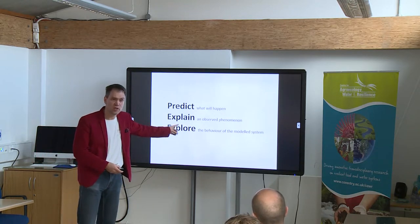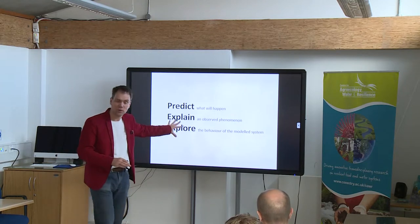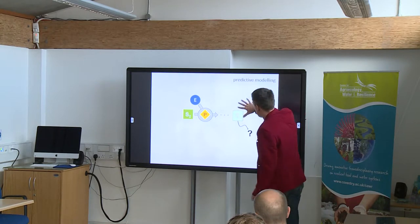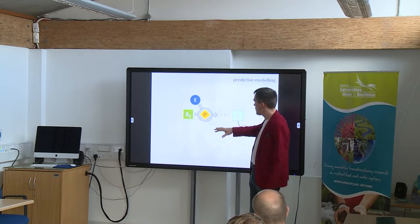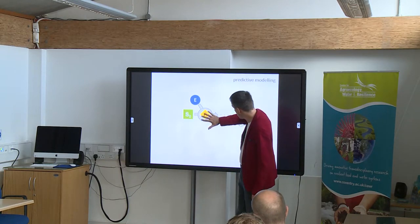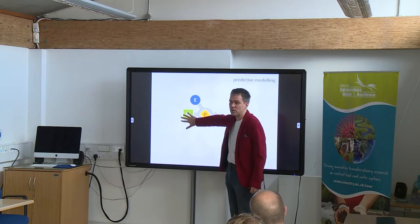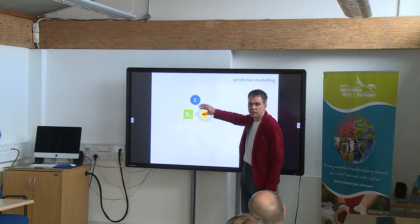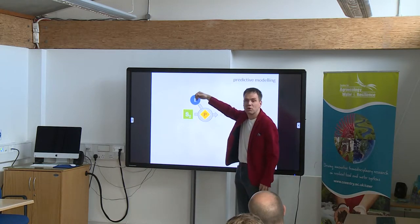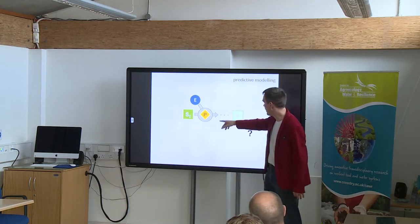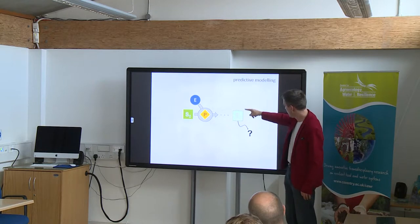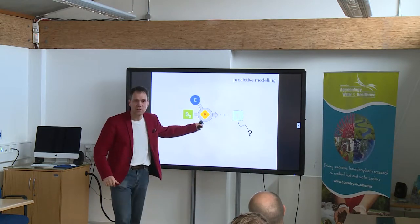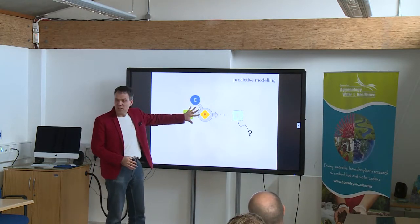Note that none of these things mention geomorphology — this is generic for all process-based modelling. A predictive model is where, if we know the initial state of the system, and if we know what all the processes are and can capture them in a nice algorithm, and if we know what the external forces are — then we can put it all together and make predictions of the future state in time.